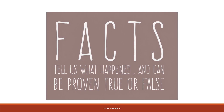Facts tell us what happened and can be proven true or false. Facts are basically certain statements which can either be true or they can be false, but no one is showing their personal affiliations with that thing. A fact could be very general and that would be acceptable for everyone. So let's see what opinions are, then we can differentiate between them better.